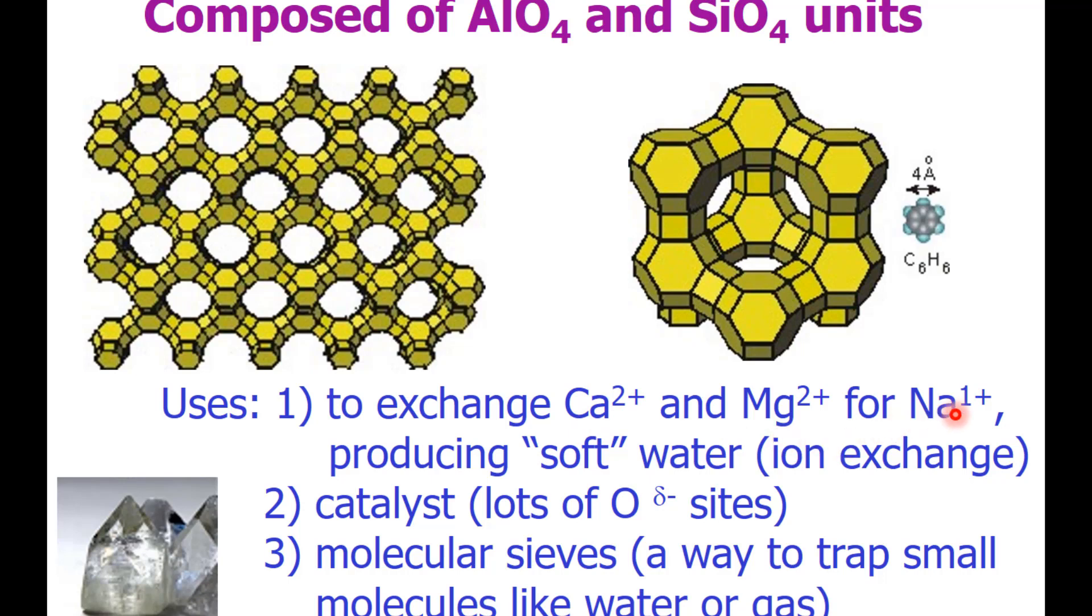Another use of these materials is catalysts because they have a lot of oxygen sites that are partially negative or fully negative. A final way these are useful is as molecular sieves for water purification. Here is a benzene molecule next to the cavern-like structure of the zeolite. So you can see that organic molecules can sort of wander into these structures and just like if you went into a cave without any rope or chalk markings, you might find it hard to find your way out. That is what happens with small organic molecules with these molecular sieves.